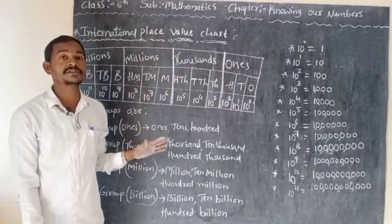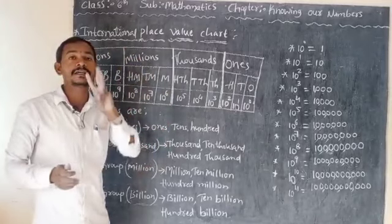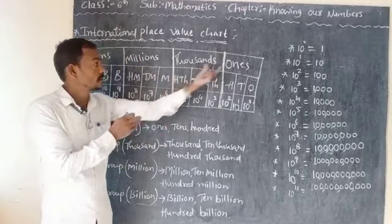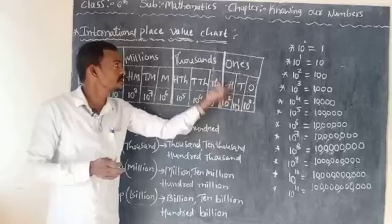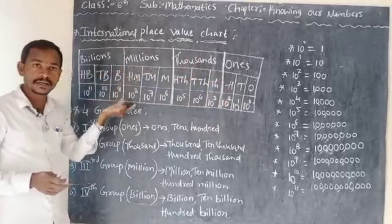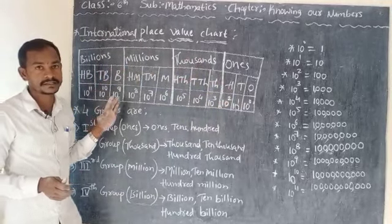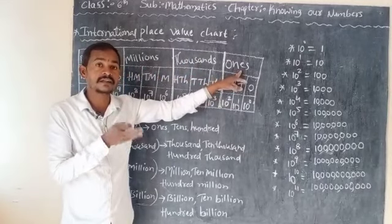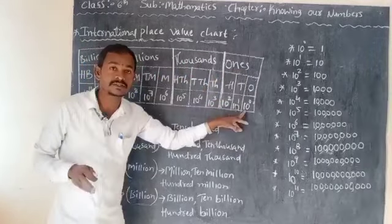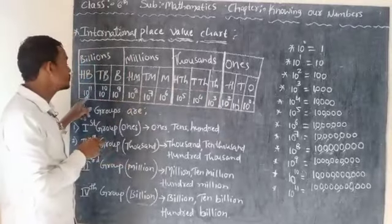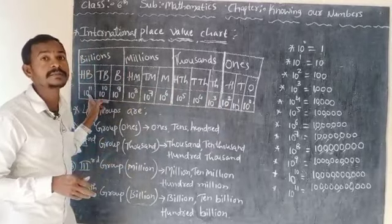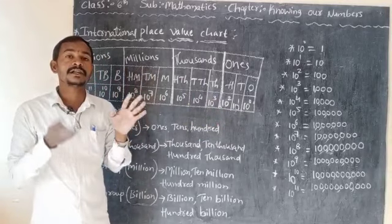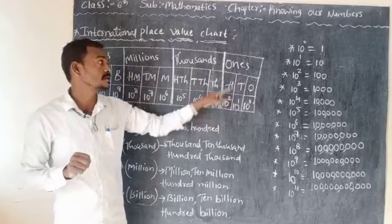In the international system, every group has 3 places. First group: 3 places; second group: 3; third group: 3; fourth group: 3. The international place value chart starts from 10 raise to 0 and ends at 10 raise to 11. The total places are 12, because 4 groups × 3 places = 12.